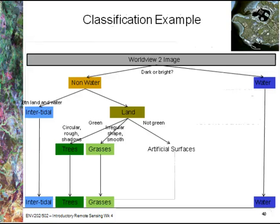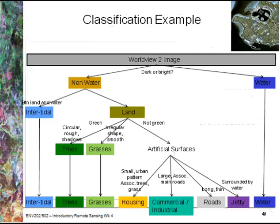I'd like to break down the artificial surfaces a little bit more. Do we have small features with an urban pattern associated with trees and grass? In which case, it might be housing. Or are they large and associated with main roads? In which case, we're looking at commercial or industrial areas. Do we have long or thin features, or roads? And are they features surrounded by water? They may be a jetty.